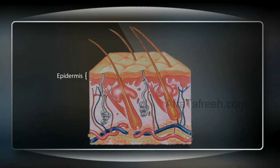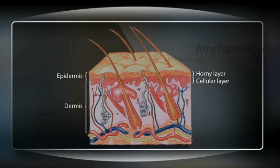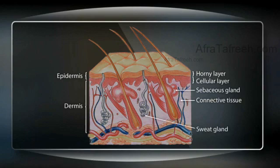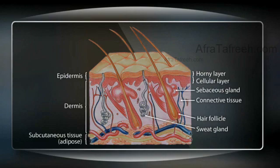The epidermis is divided into two layers: an outer, horny layer of dead keratinized cells, and an inner cellular layer where both melanin and keratin are formed. For its nutrition, the epidermis depends on the underlying dermis, which is well supplied with blood. The dermis contains connective tissue, sebaceous glands, sweat glands, and hair follicles. The dermis merges below with subcutaneous tissue, or adipose, also known as fat.